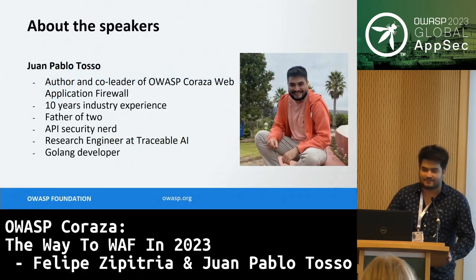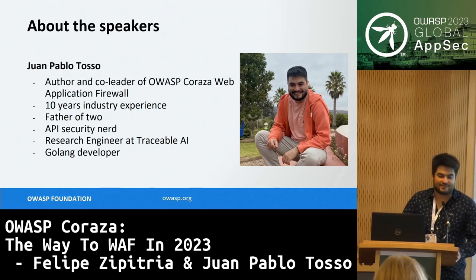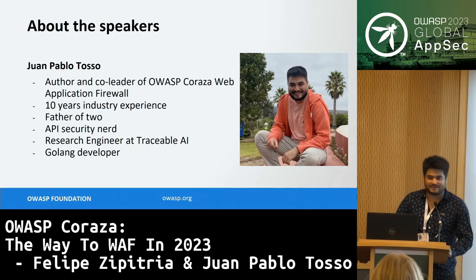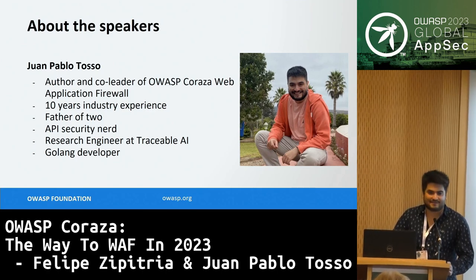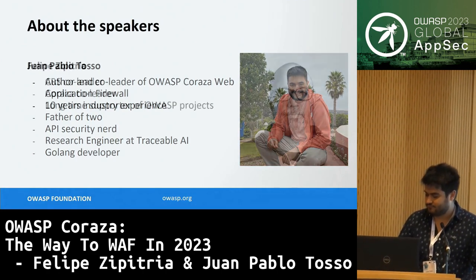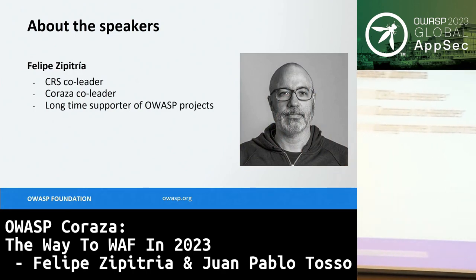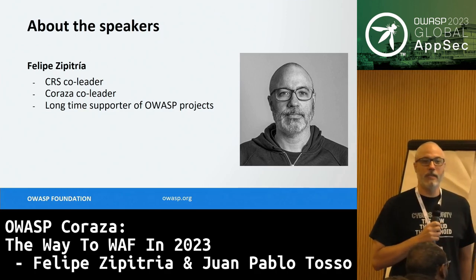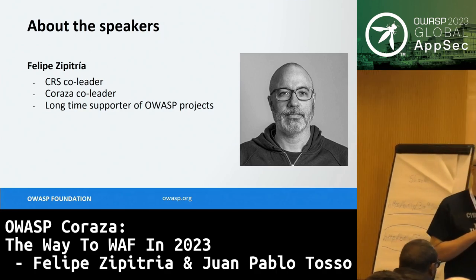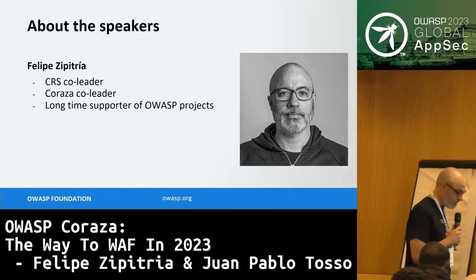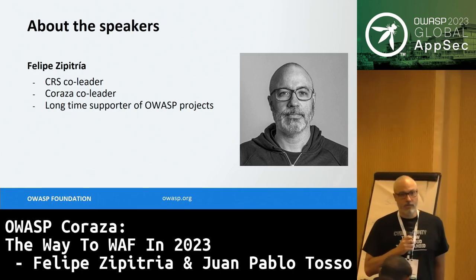My name is Juan Pablo Toso, I'm from Chile, and I am the author and co-leader of Coraza. I work in cybersecurity — I've been working on it for 10 years, and right now I work at Traceable, dedicating my career to API security. And I'm Felipe Cipitria, CRS Core Ruleset co-leader and Coraza co-leader, which is a good synergy for us. I'm also a long-time supporter of many OWASP projects and chapter leader in my home country Uruguay.